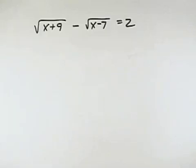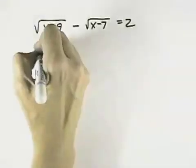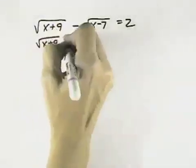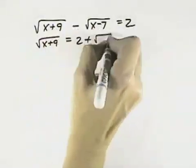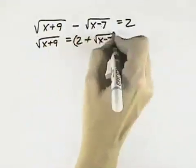I want to solve this radical equation. To do that, I can only get rid of one radical at a time. So I'm going to isolate one radical. I'll isolate the x plus 9 under the square root symbol by putting the square root of x minus 7 on the other side.